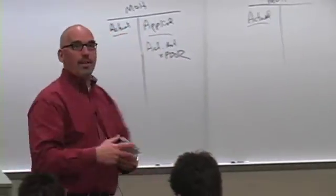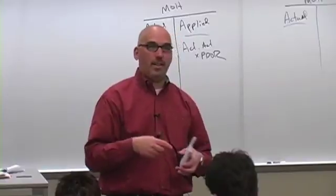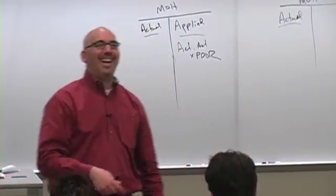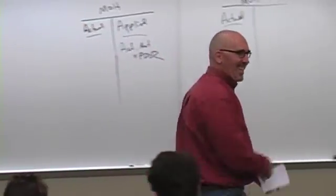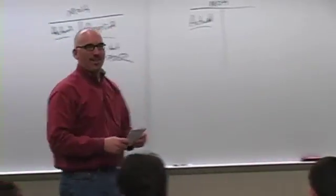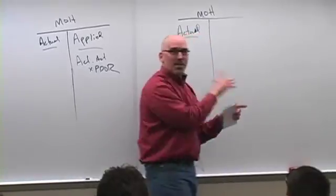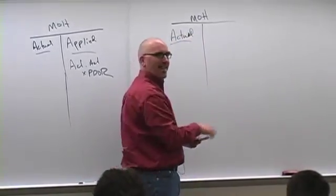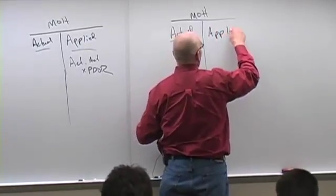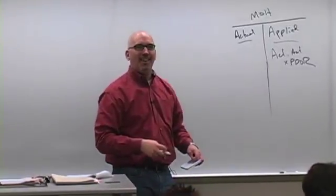Actual goes on the left side of the manufacturing overhead T account. What is the fancy accounting name for the left side of the T account? The debit side — yes. So this is the debit side. What's the right side, Erica? The credit side. That's applied. I was writing on the credit side — to confuse me.